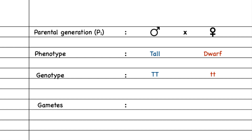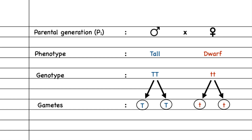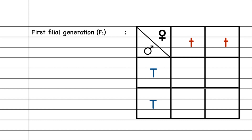We will see how the gametes are formed from each plant. A gamete will always consist of 50% of the genes. So for the male tall plant, the first gamete will have capital T and the other gamete will also have capital T. For the dwarf female plant, one gamete will have small t and the other gamete will also have small t. Now we will see how Mendel obtained the first progeny or offspring when the gametes united to form the zygote — these results are called the first filial generation, or F1 generation.